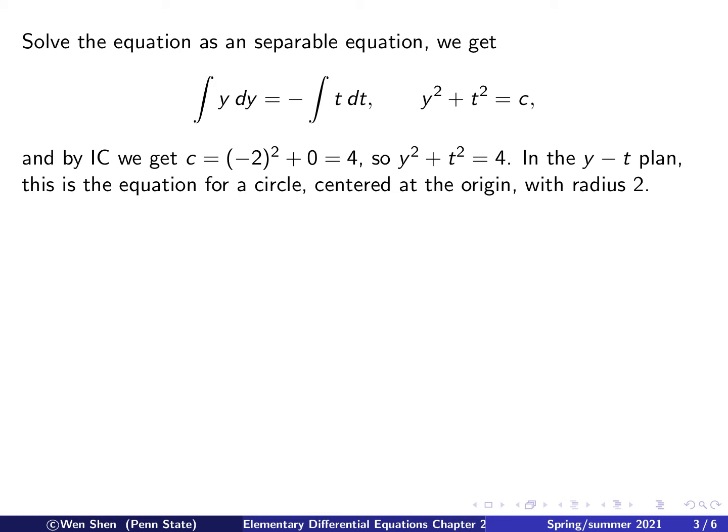And now this arbitrary constant c can be determined by our initial condition. Let's put that in. The initial condition is t is 0, y is negative 2. So c would equal 0 plus 4, and therefore c is 4.